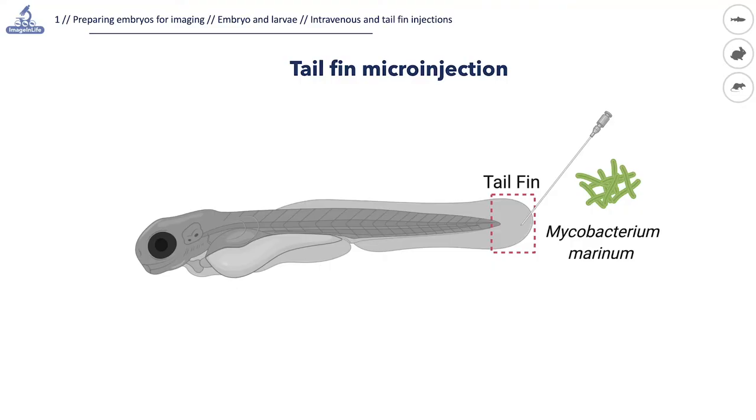However, for some research questions it is useful to inject locally in a specific tissue. As an example of a local microinjection technique, I will describe tail fin injection into three-days-old larvae. The tail fin consists of a few cell layers. This thin tissue enables high-resolution imaging of biological processes at a cellular and intracellular level, and in real time.